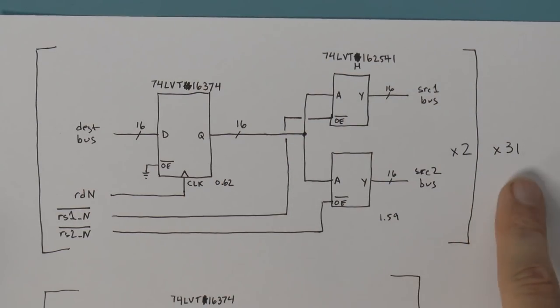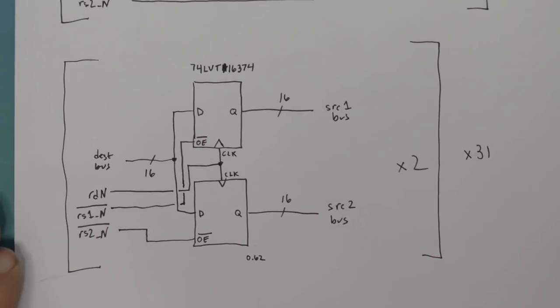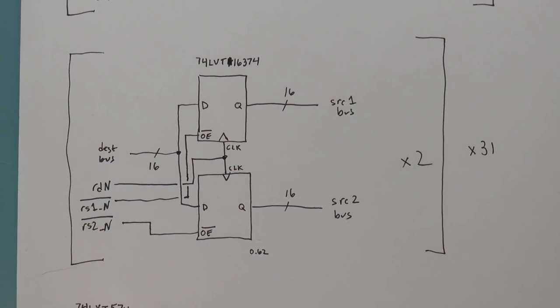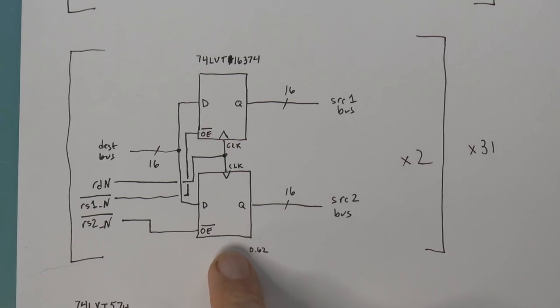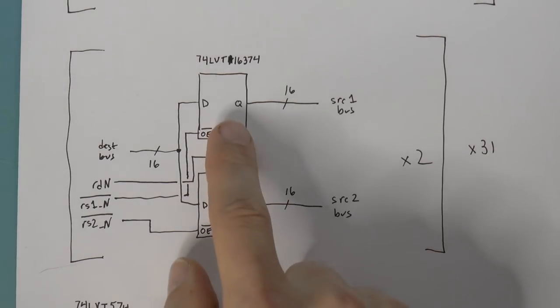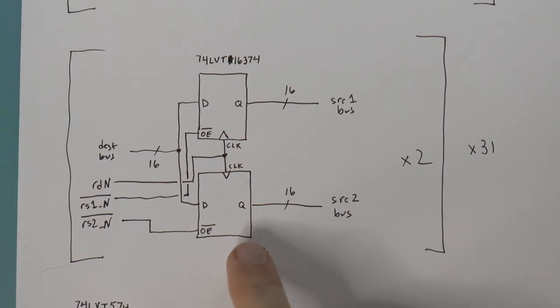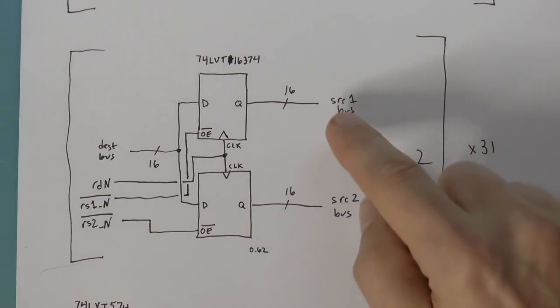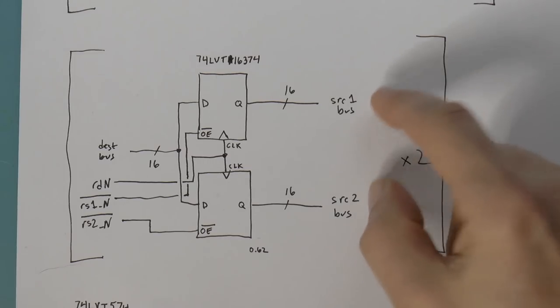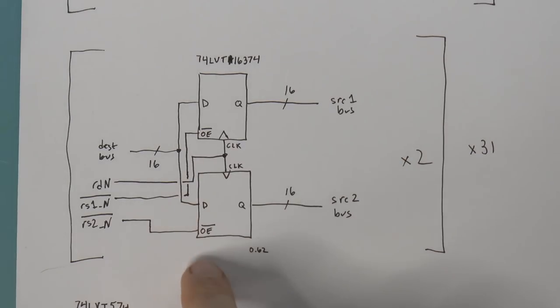So that would be two of these. And then of course you would multiply that by 31 because we need 31 registers, remembering that register X0 is always 0. Now here's an alternative architecture. What I've done here is I've eliminated the two buffers, and the reason for that is that the 16-bit registers have output enable signals. The problem of course is that these registers don't have two outputs which you can enable one or the other. So you have to have two registers with their inputs connected, and they will store the same value. And then you can simply output one or output the other or output both or output none, depending on the output enable signals.